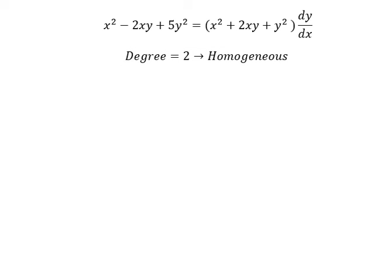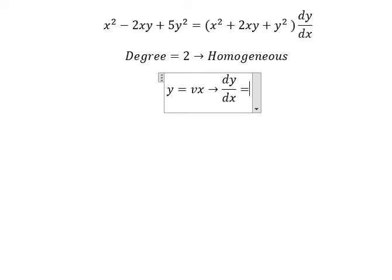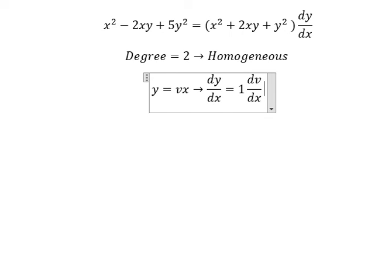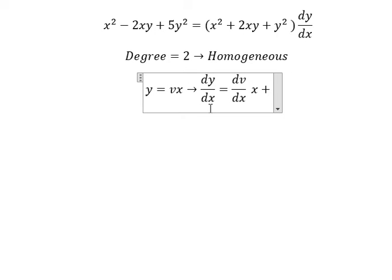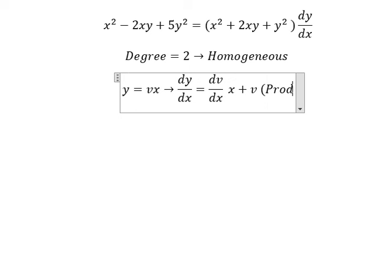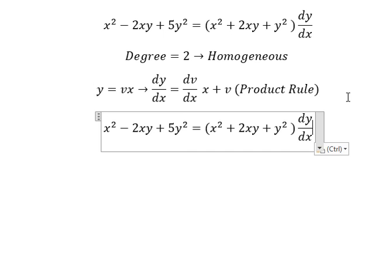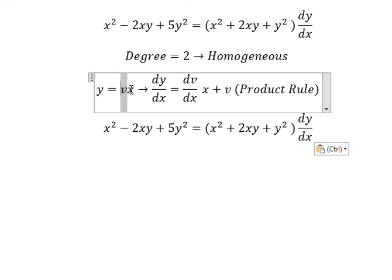I will put y equals to vx. First we do the right-hand side. We have one dv over dx multiplied by x, so we can simplify like this. We do the first derivative of x, so we have number one, and that is about v. This is about the product rule. We need to change y into vx.